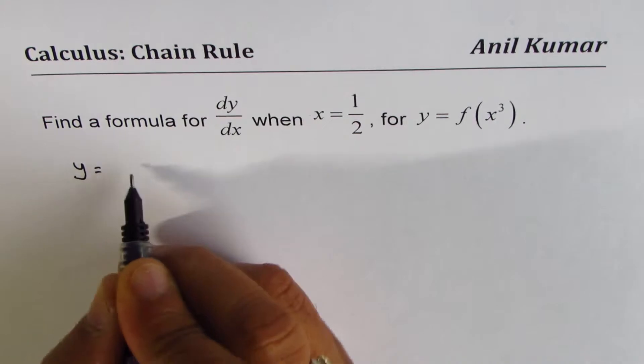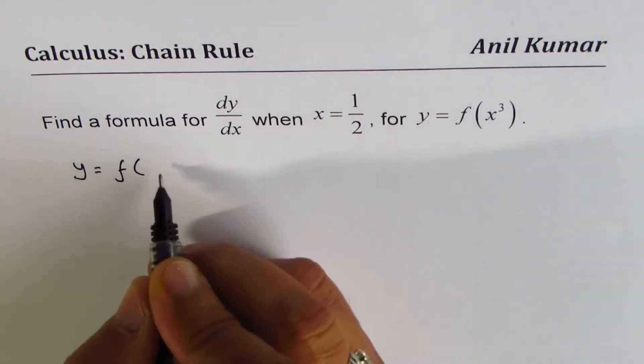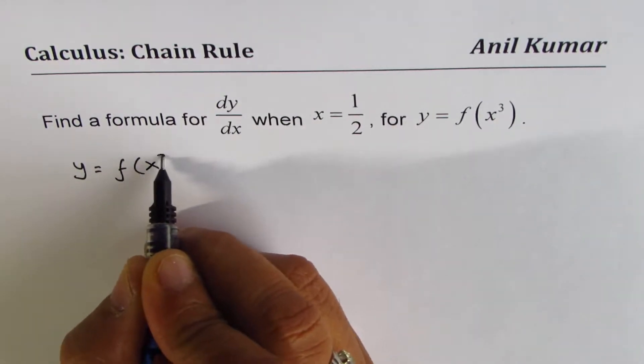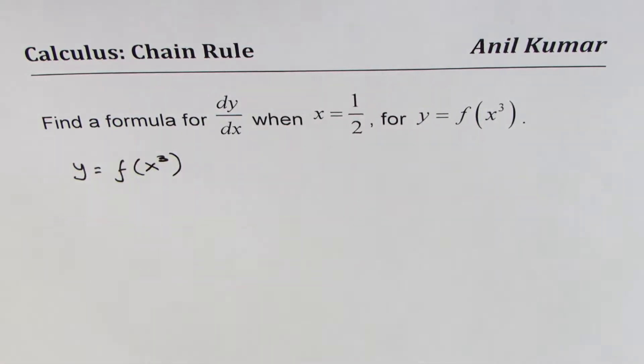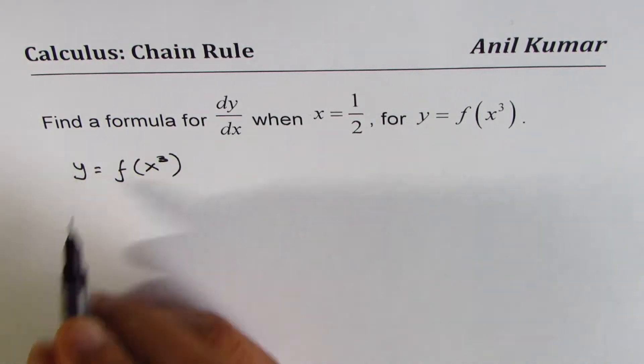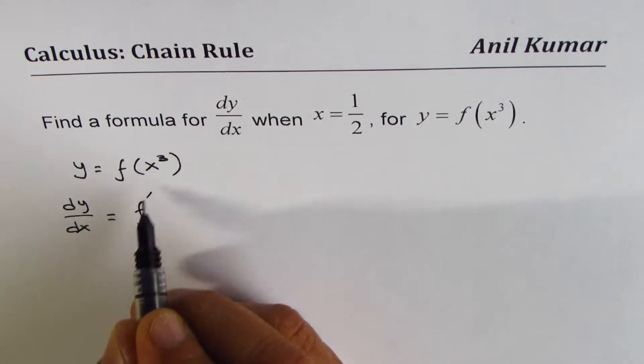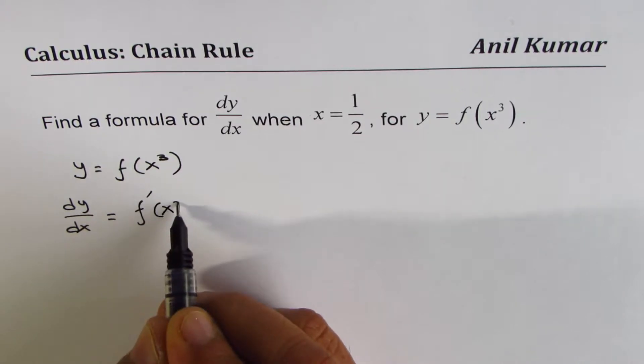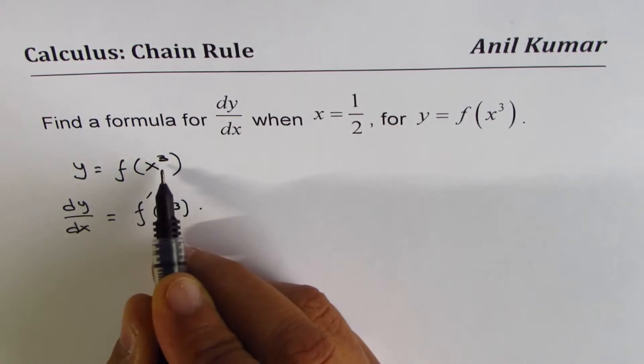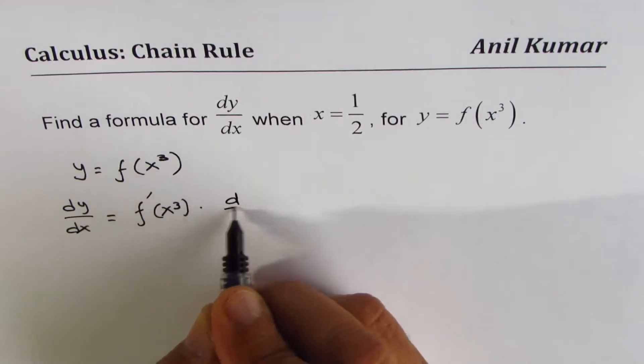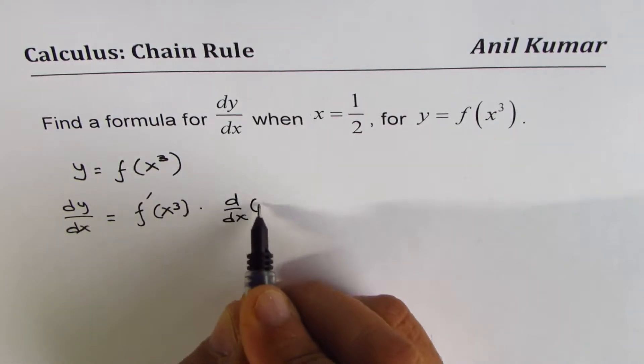We are given y equals f(x³). That means y is a function of x, so we can find the derivative with respect to x. We get dy/dx equal to the derivative of the function times the derivative of the inside function, d/dx of x³.